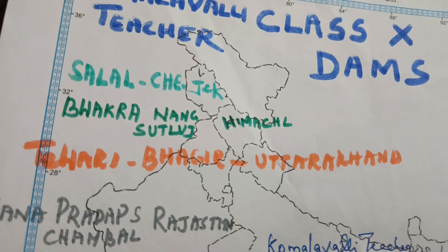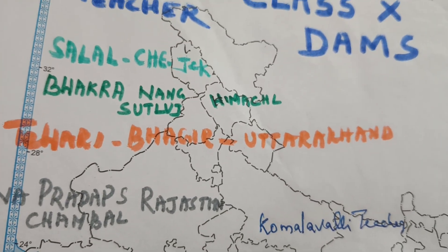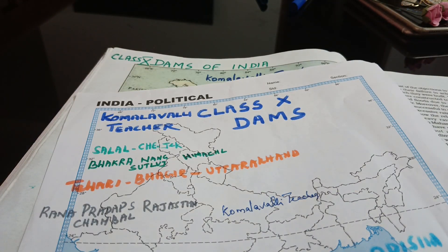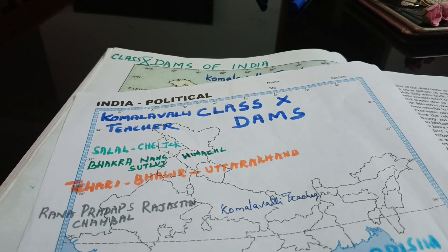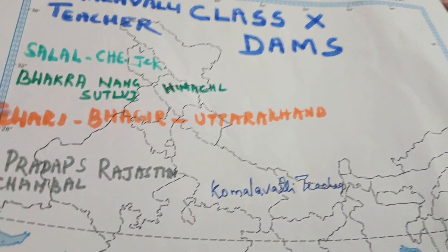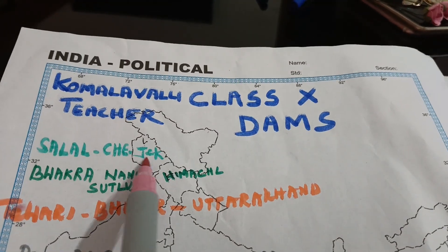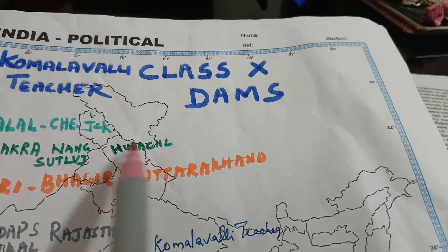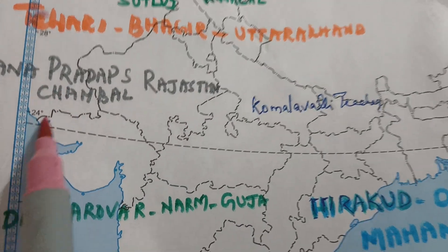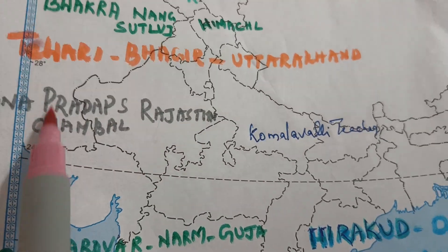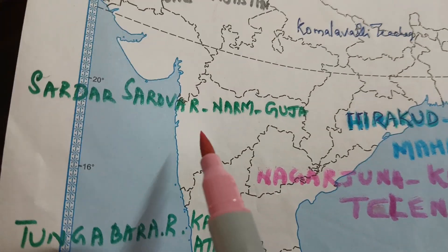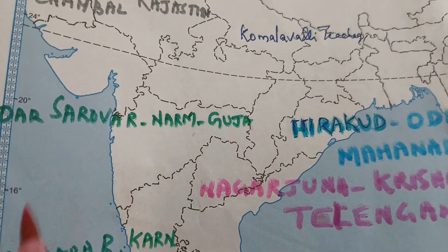To recap: Salal Dam is in Jammu and Kashmir; Bhakra Nangal Dam is on the Sutlej river in Himachal Pradesh; Tehri Dam is on the Bhagirathi river in Uttarakhand; Rana Pratap Sagar Dam is in Rajasthan on the Chambal river; and moving south, Sardar Sarovar Dam is on the Narmada river in Gujarat.